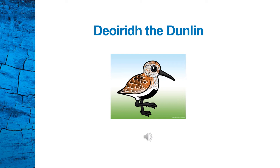Soon Deary realised there were other things she had not inherited — things she had to learn from other dunlins, particularly her wise Aunt Minerva, who seemed to know everything. From Aunt Minerva she learnt how to recognise predators, about all the different types of bird songs such as alarm calls. Dunlins would use alarm calls to signal when there was any danger.